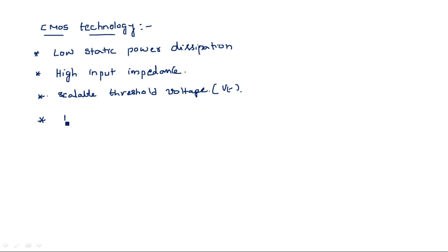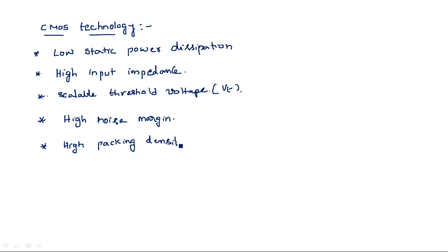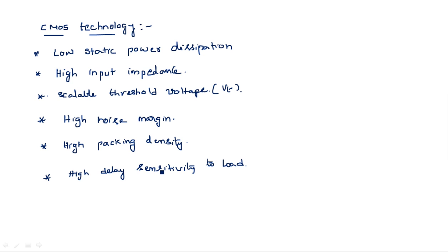Another advantage of CMOS technology is high noise margin. It also offers high packing density — within a small area, we can accommodate a large number of transistors. However, CMOS has high delay sensitivity to load, which is a limitation with respect to fan-out.